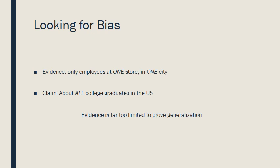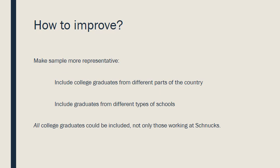So how do we improve it? We need a more representative sample. We need college graduates from different parts of the country and from different types of schools — not just prestigious schools, but community colleges, big state universities, small colleges, private and public schools. They also need to be racially mixed, mixed in age and gender. Really, any college graduate should theoretically be eligible for inclusion in the sample, not only those working at Schnucks.